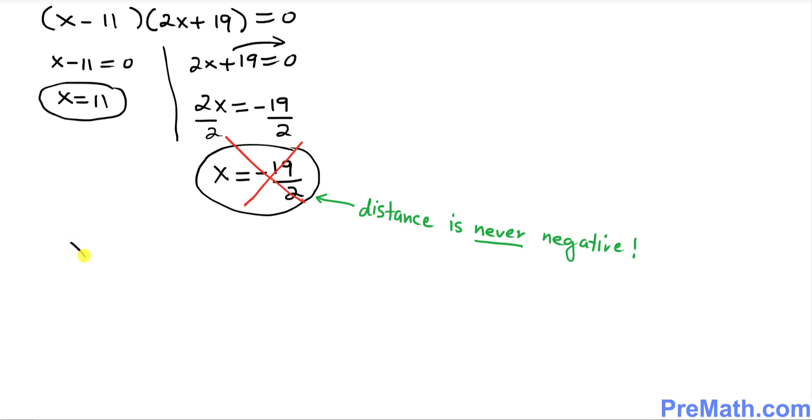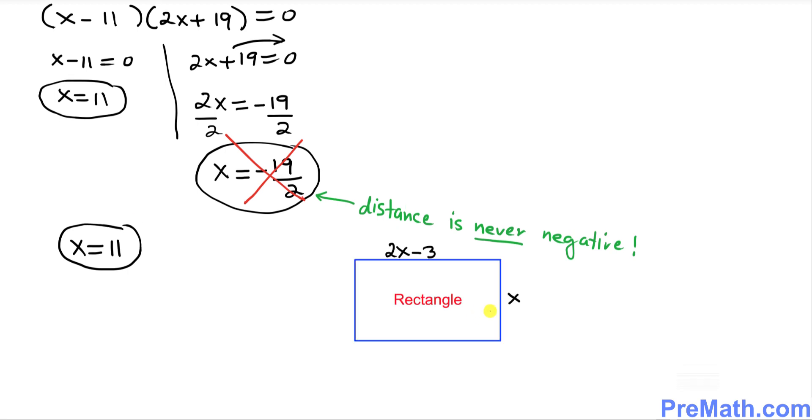Thus x equals 11 is our only solution. Thus one side of this rectangle is x equal to 11 feet.